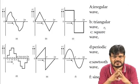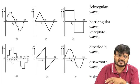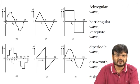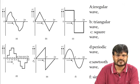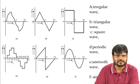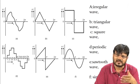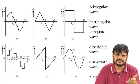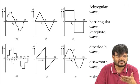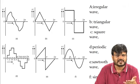There are different wave shapes of alternating supply. Our focus is on the sinusoidal waveform. Other shapes include irregular waveform, triangular wave, square wave, periodic wave, and sawtooth wave. All of these represent one cycle from 0 to 2π — going from 0 to maximum, back to 0, down to negative maximum, then back to 0. Whatever supply is used at home for utilization is a sinusoidal waveform.